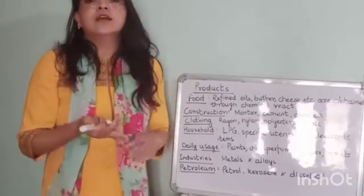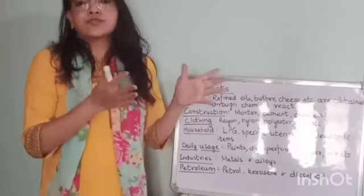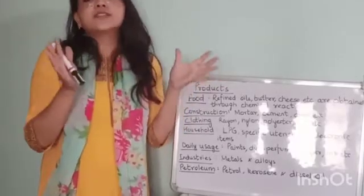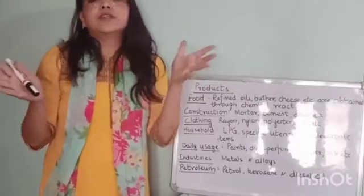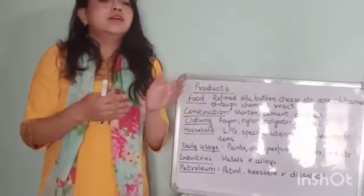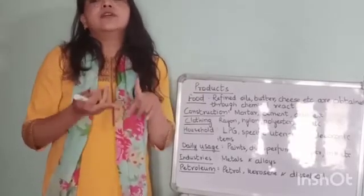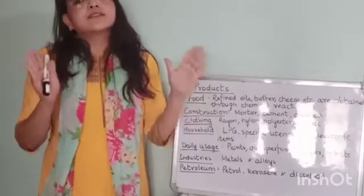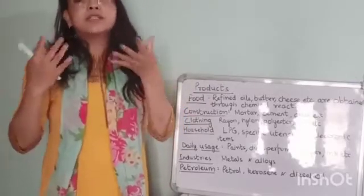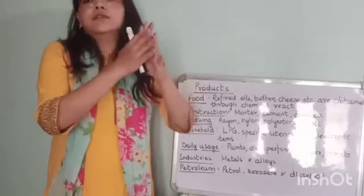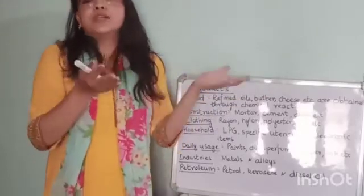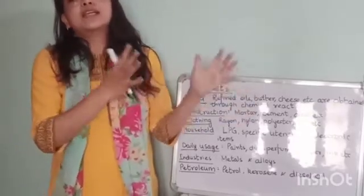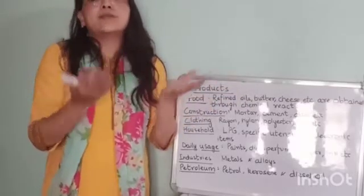Not only ghee, butter, or cheese — many other foods involve chemistry, including food preservatives that are added in jams, pickles, and other packaged foods. In construction, many different types of construction materials like cement, mortar, glass, and others are used to build buildings, houses, and bridges. All these materials go through chemical processes or are chemical compounds.